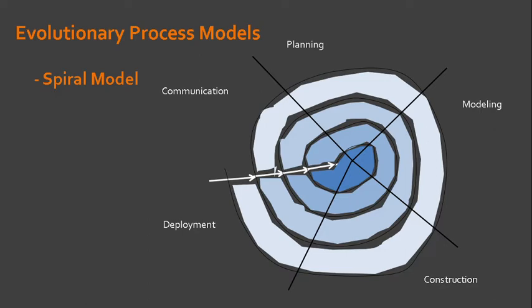Using the Spiral Model, software is developed in a series of evolutionary releases. During early iterations, the release might be a model or a prototype. During later iterations, increasingly more complete versions of the engineered system are produced.